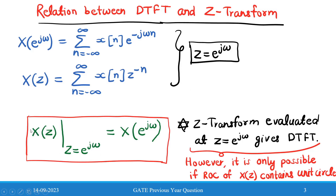We can write the final expression such that the Z-transform evaluated at z = e^(jω) gives the Discrete Time Fourier Transform. However, this DTFT of a discrete signal is possible only if the ROC of X(z) contains the unit circle. This point is very important — you can only find the DTFT of a discrete signal if the ROC of X(z) contains the unit circle.